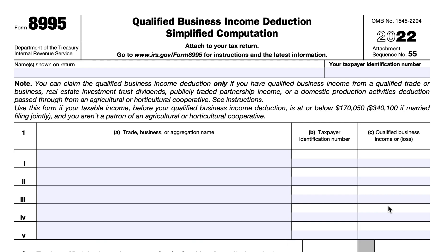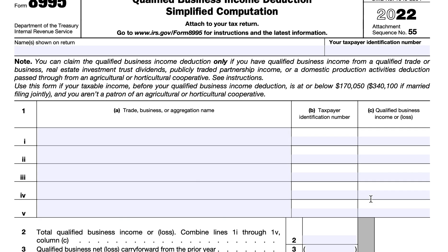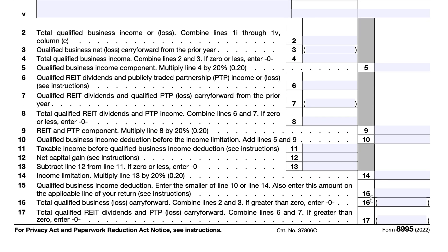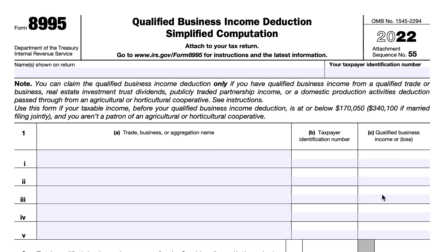Form 8995 is a one-page document. We'll go through each of these lines step-by-step. If you want to learn more about Qualified Business Income, Qualified REIT Dividends, Publicly Traded Partnership Income, or Domestic Production Activities Deduction, you may check out our article at teachmepersonalfinance.com. Type in IRS Form 8995 and you should find articles on both this form and Form 8995-A.